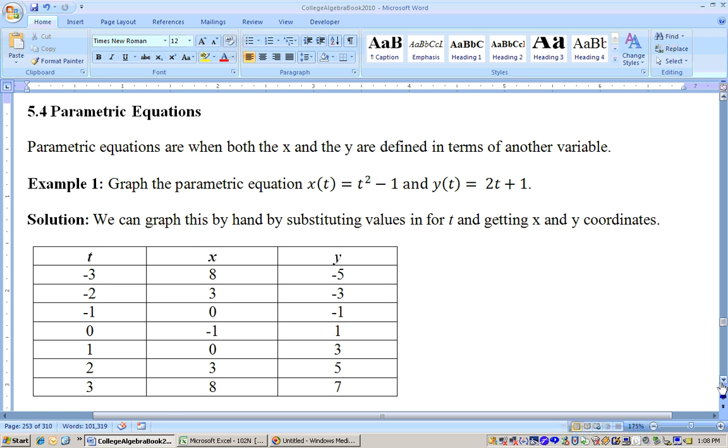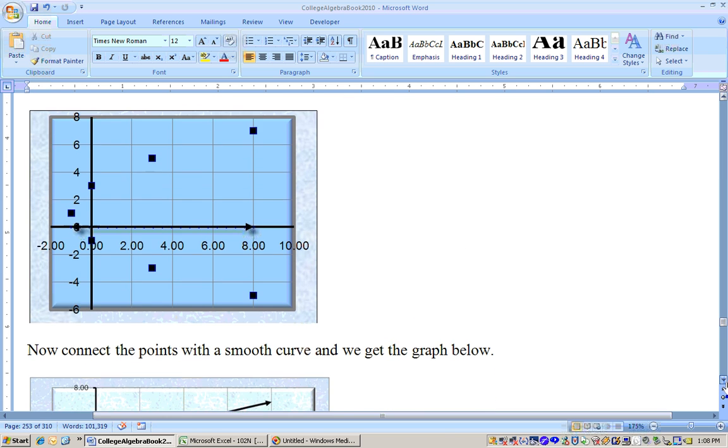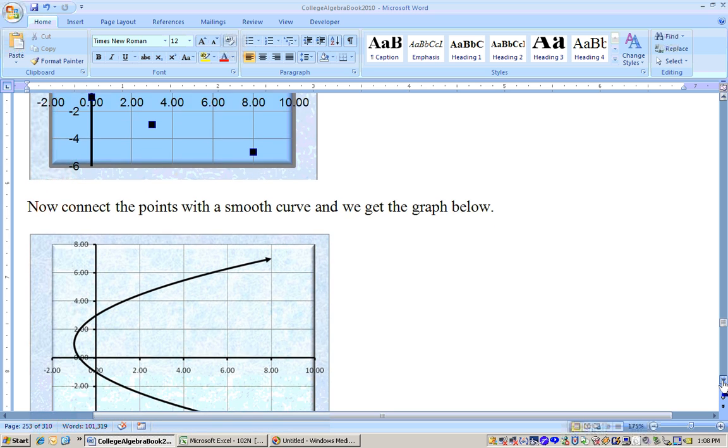Then if you plot these on a piece of paper, you would get something that looks like this, and you might get the idea that this is a sideways parabola. If we connect those with a smooth curve, it would look like a sideways parabola.